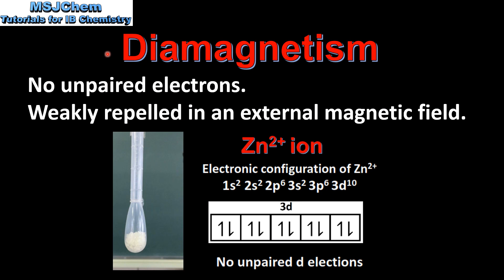Next we look at diamagnetism. From the demonstration you can see that the zinc 2+ ion had no effect in the magnetic field. The zinc 2+ ion is diamagnetic — it has no unpaired electrons. Diamagnetic materials are weakly repelled in an external magnetic field.